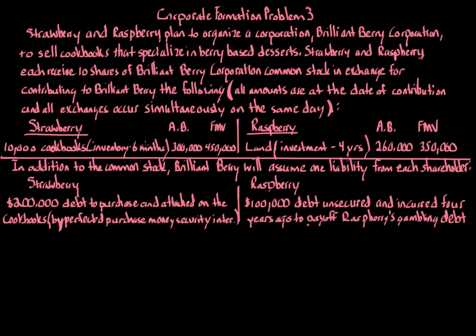In addition to getting the common stock, Strawberry and Raspberry each have liabilities, and Brilliant Berry is going to assume one of those liabilities. There's no distinction here between recourse and non-recourse — recourse meaning someone is personally liable, non-recourse meaning no one is personally liable. That makes no distinction here. So Brilliant Berry is going to assume one liability from Strawberry and one from Raspberry. The liability Brilliant Berry assumes from Strawberry is $200,000 of debt that Strawberry used to purchase the 10,000 cookbooks, and it's attached to the cookbooks through a perfected purchase money security interest.